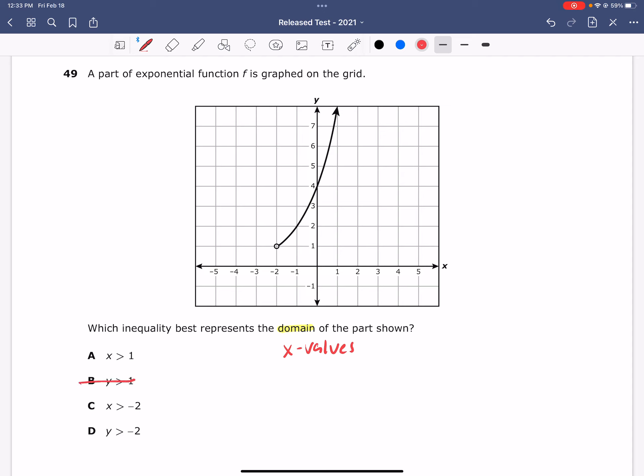Therefore, any answer choice that has y is automatically incorrect. We see that B is not going to be the right answer, and D is also not going to be the right answer.